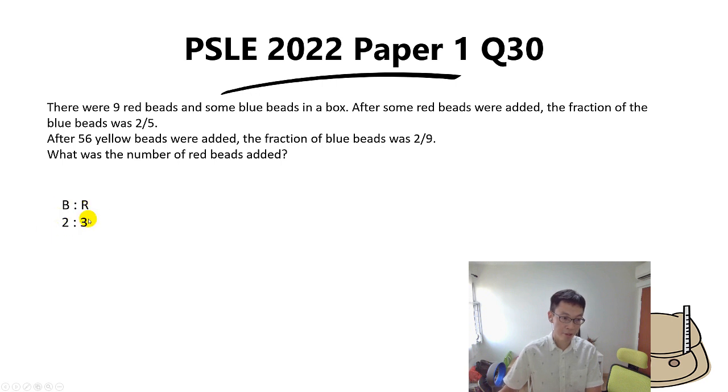Keep in mind this is the ratio after you add the red beads. Now after you add the 56 yellow beads, the ratio becomes 2 is to 7, because 9 minus 2 gives us 7. Keep in mind blue is 2 and 7 is red plus yellow. Why plus yellow? Because he added 56 yellow beads.